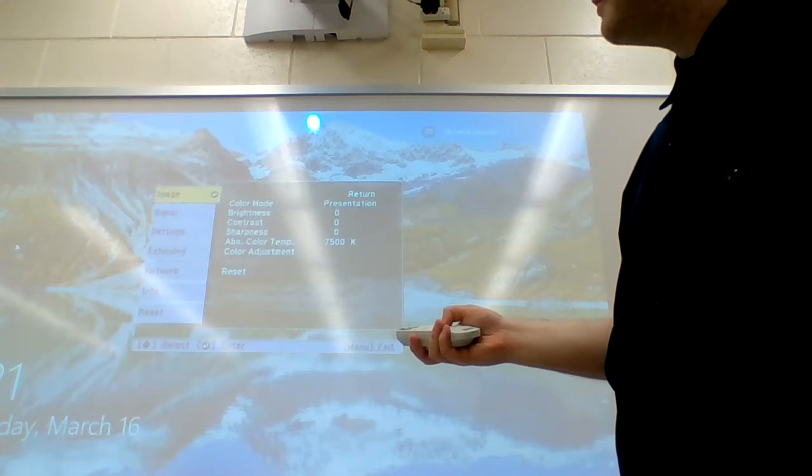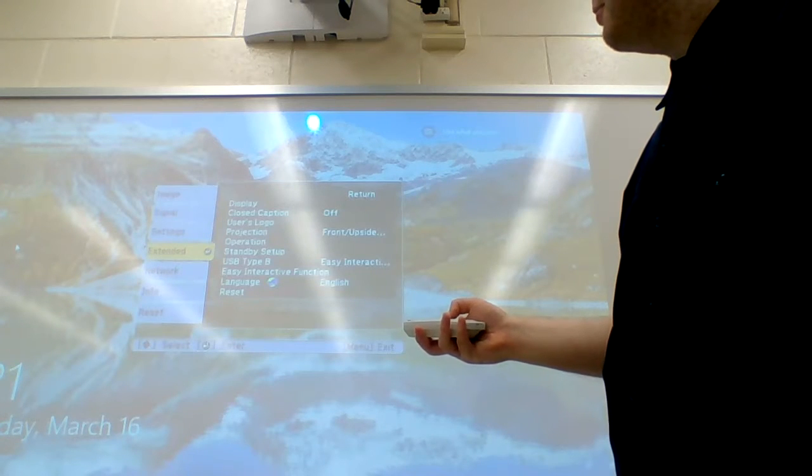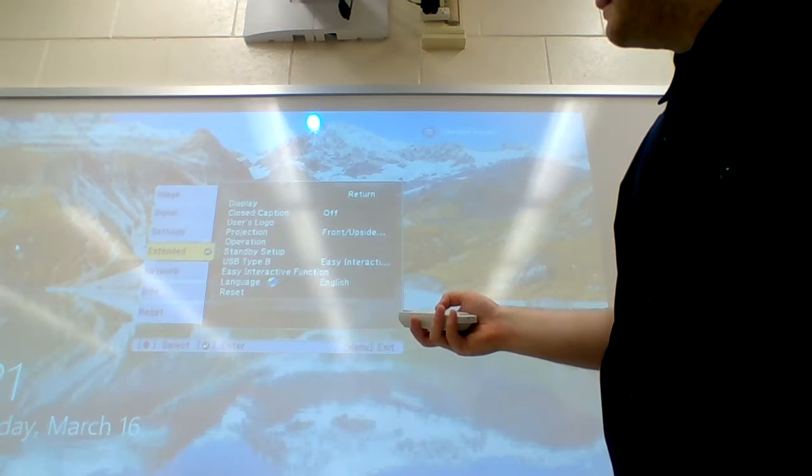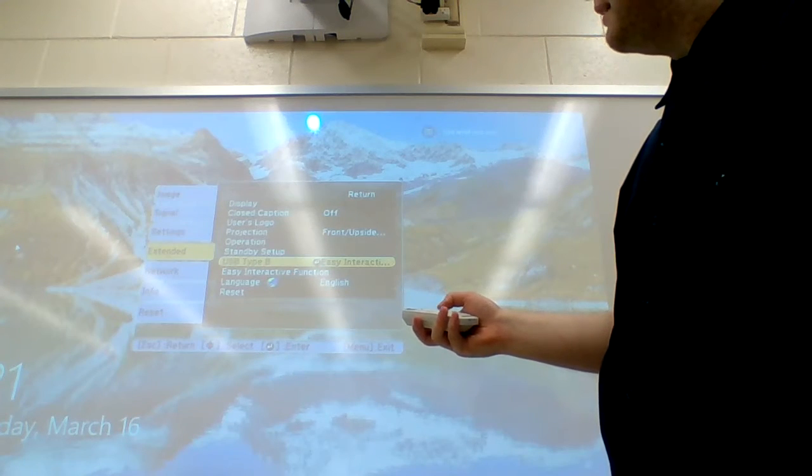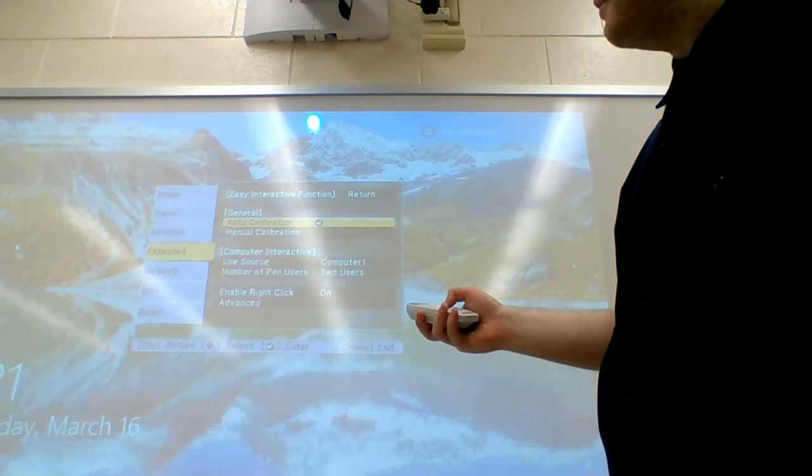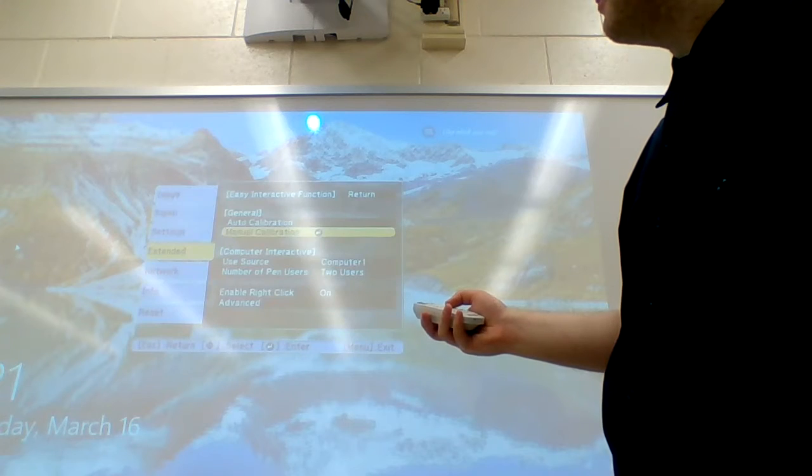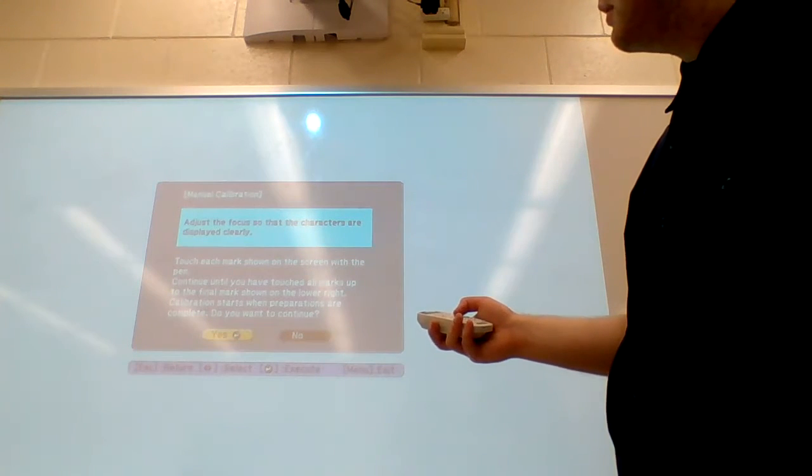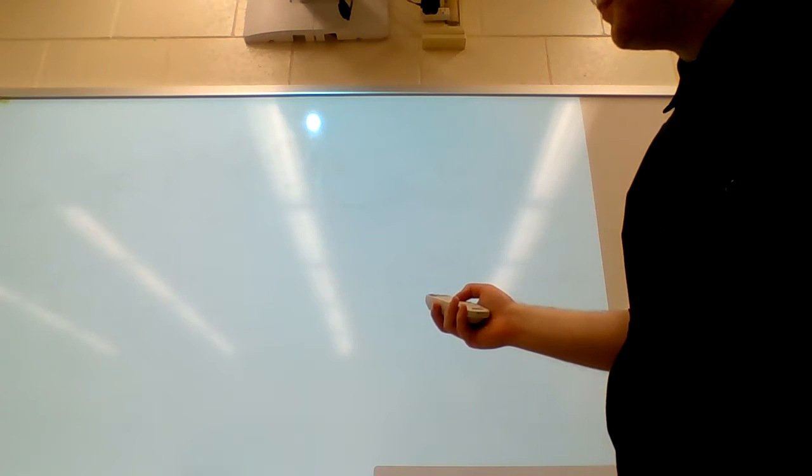So we hit menu and we want to scroll right on down to extended. Go over to easy interactive function and you want to hit manual calibration. Manual calibration. A pop-up comes up. You would want to say yes to it.